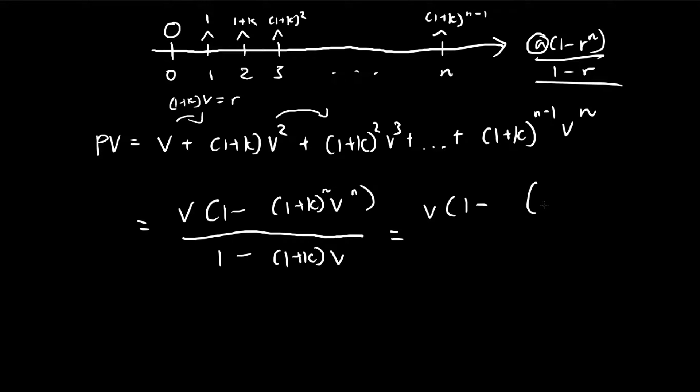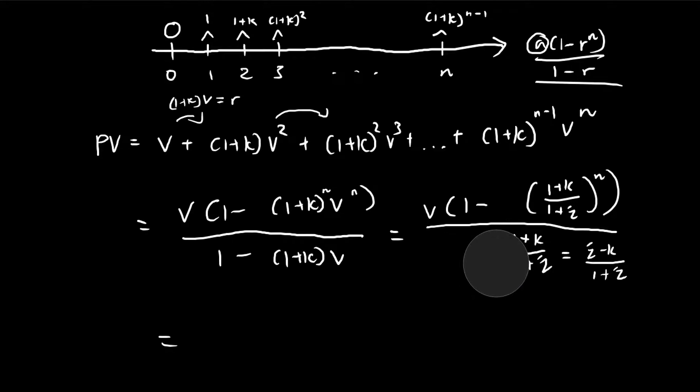Instead of v, I'll express it in terms of i, so 1 over (1+i). Same for the denominator. We can combine these terms. Instead of 1, I write (1+i) divided by (1+i) minus. When these terms subtract each other, you get (i-k) divided by (1+i). That's what the denominator is equal to.